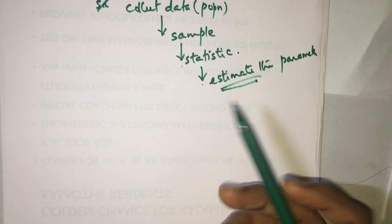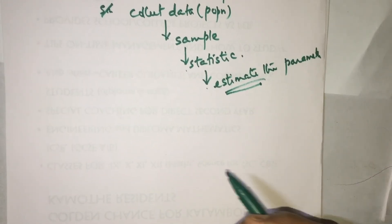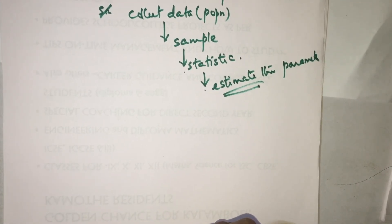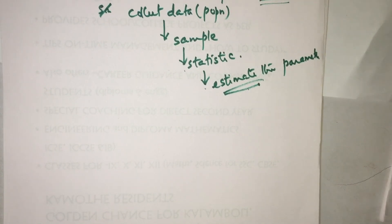So, collection of data — that is, population — is done by two methods: census method and sampling method. Census method means data is collected from each member. Sampling method means data is collected from a sample of a population. From census we calculate parameters such as mean and standard deviation, and from a sample using the sampling method we calculate a statistic, then from that statistic we estimate the parameter. This is what we are going to discuss in this chapter — Large Sample Test.